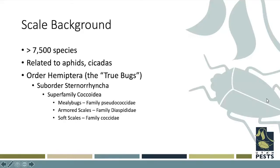In terms of scale background: there are many species — over 7,000 known. They're related to aphids, cicadas, box elder bugs, and squash bugs. These are all true bugs in the order Hemiptera. The defining characteristic of true bugs is their piercing and sucking mouthparts, which they use to extract nutrients from plant tissues — usually feeding on the phloem layer. Scale insects are in the suborder Sternorinca, within the superfamily Coccoidea.